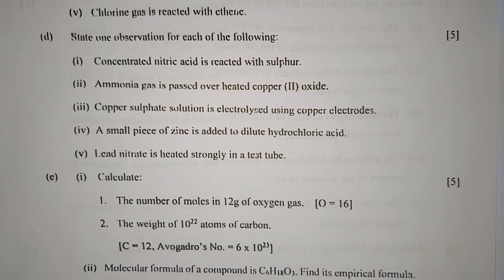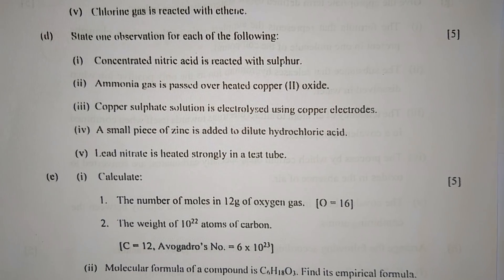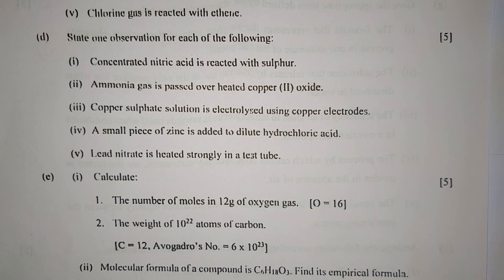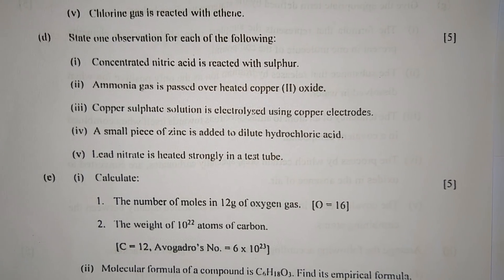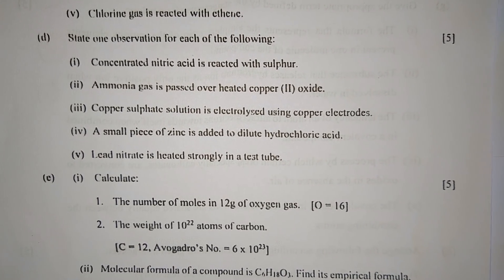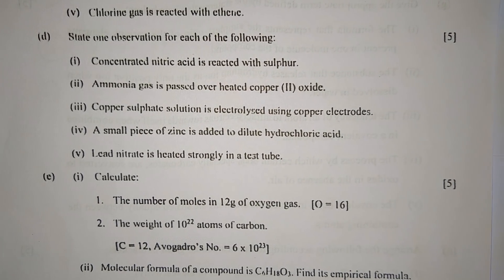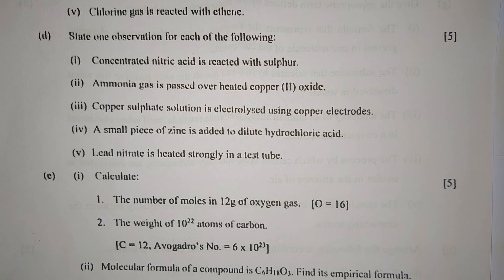Number two: Ammonia gas is passed over heated copper two oxide. When ammonia gas is passed over heated copper two oxide, reddish-brown solid copper is produced.